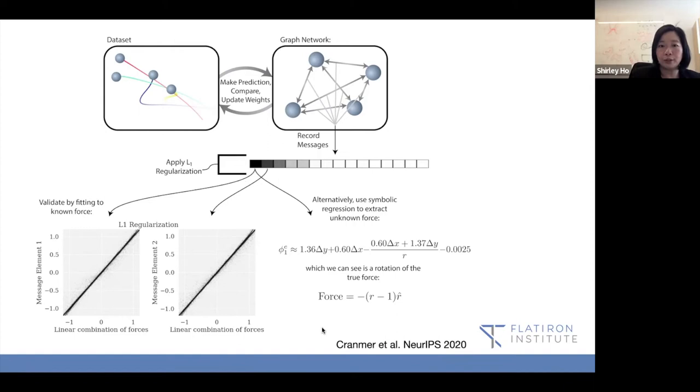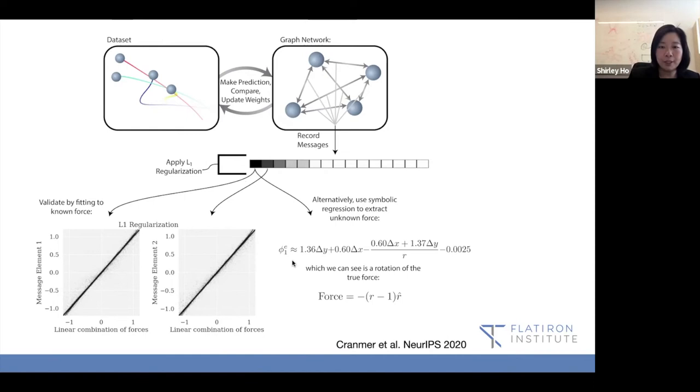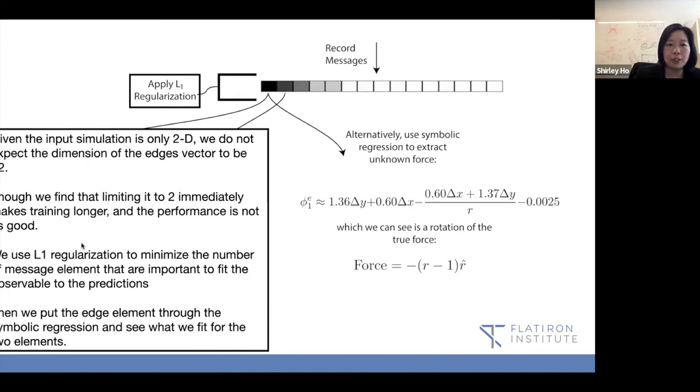What we end up doing is that we want to encourage this low-dimensionality representation in the graph network before we can extract to this symbolic equation. And how do we do that? It's originally we thought it's surprisingly simple, but it's not as simple as we think, as we apply this to other data sets. For this particular data set, we recorded the messages in this edge function. And we simply apply L1 regularization. We tried many different regularization methods and realized that applying L1 regularization makes it very sparse on the message factor.